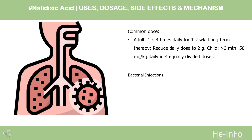Dose: Adult — 1g four times daily for 1–2 weeks; for long-term therapy, reduce daily dose to 2g. Child (3 months and older) — 50 mg per kg daily in four equally divided doses.